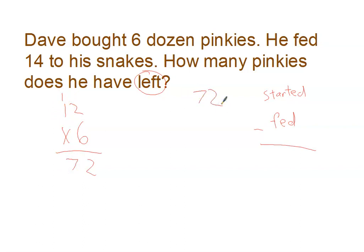He fed fourteen to his snakes. And then we just need to subtract. Come borrow. Twelve minus four is eight. Six minus one is five. Fifty-eight pinkies left.